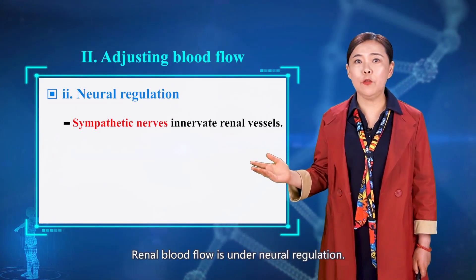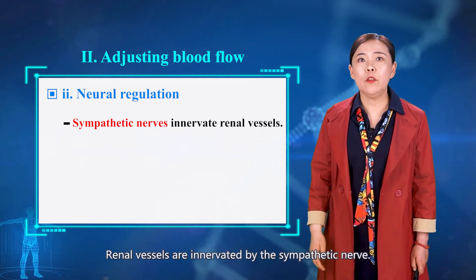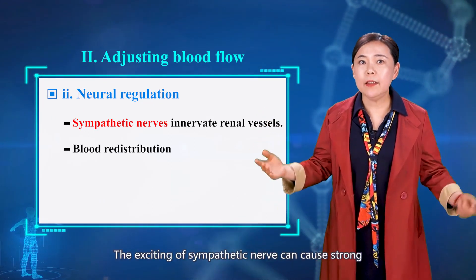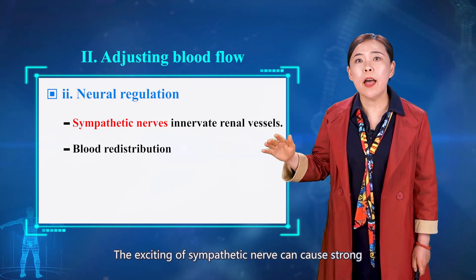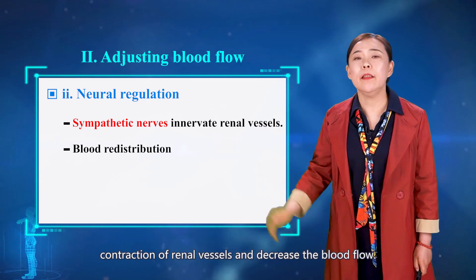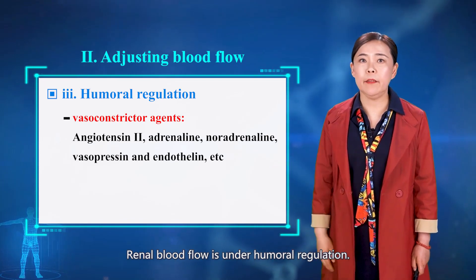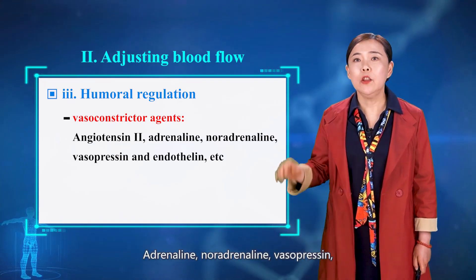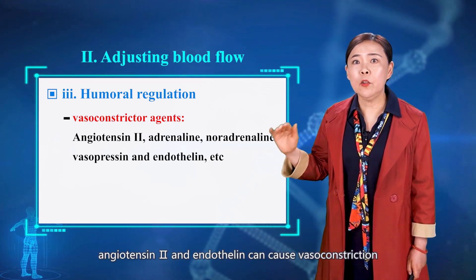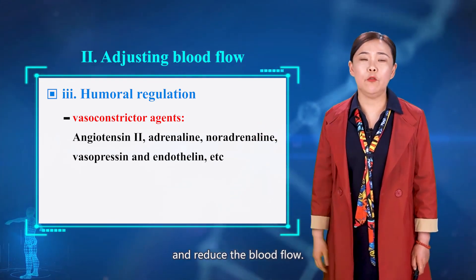Renal blood flow is also under neural regulation. Renal vessels are innervated by the sympathetic nerve; excitation of the sympathetic nerve can cause strong contraction of renal vessels and decrease blood flow. Renal blood flow is also under humoral regulation: epinephrine, norepinephrine, angiotensin 2, and vasopressin can cause vasoconstriction and reduce blood flow.